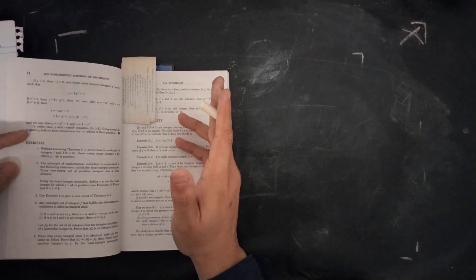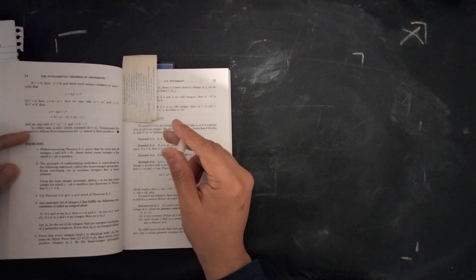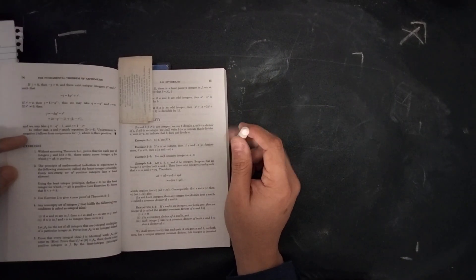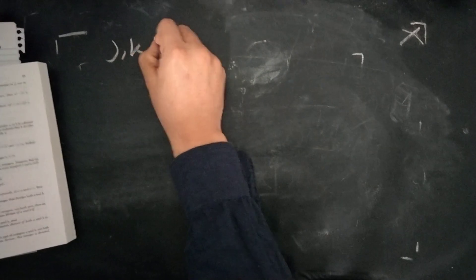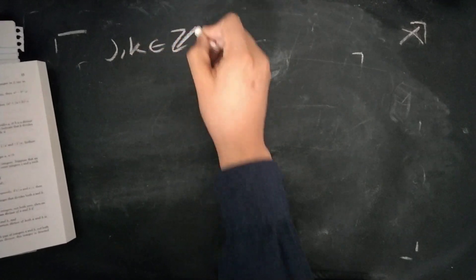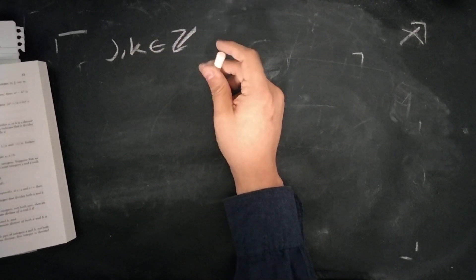The problem goes as follows, without assuming theorem 2-1, which is just Euler's division lemma. Prove that each pair of integers, J, K are integers,